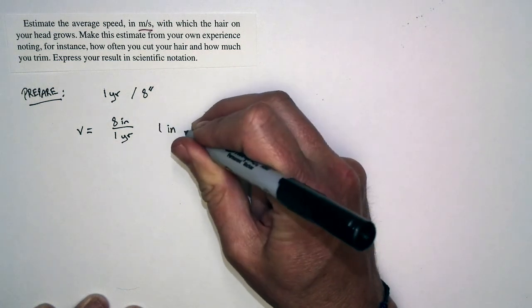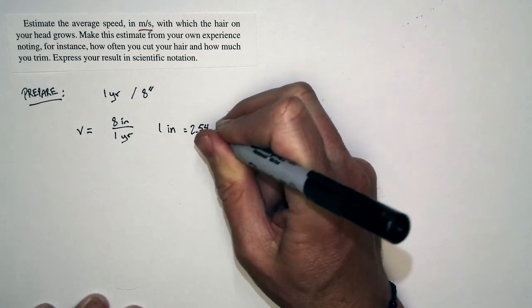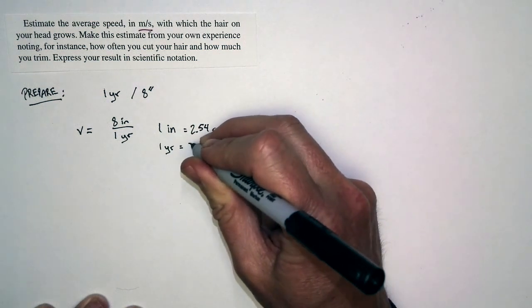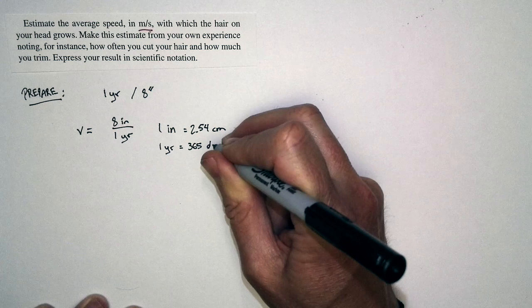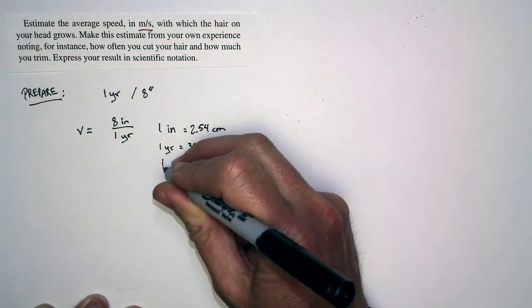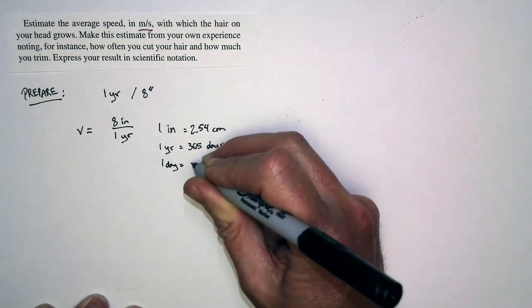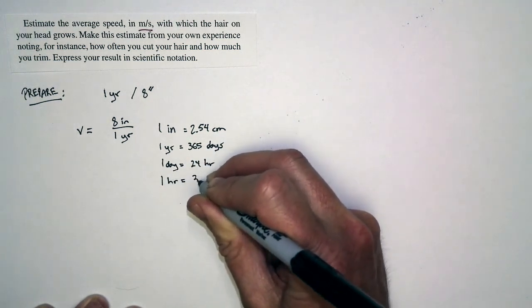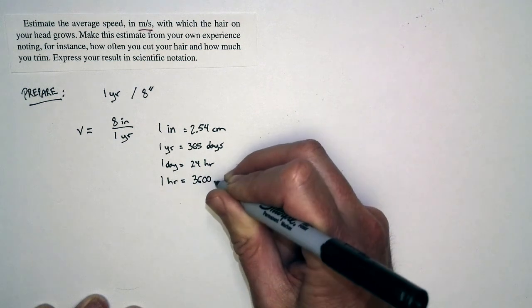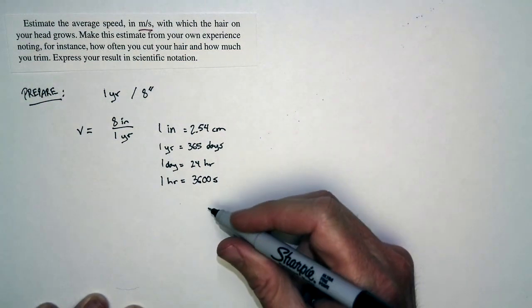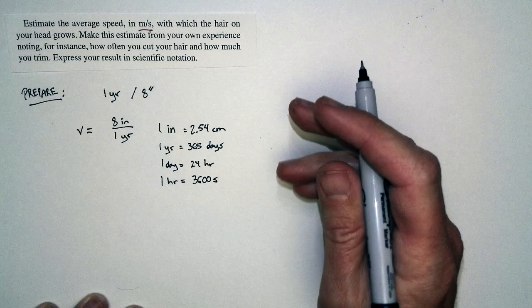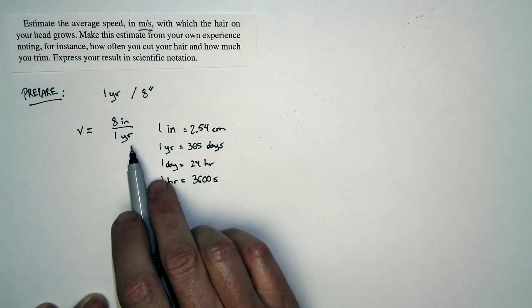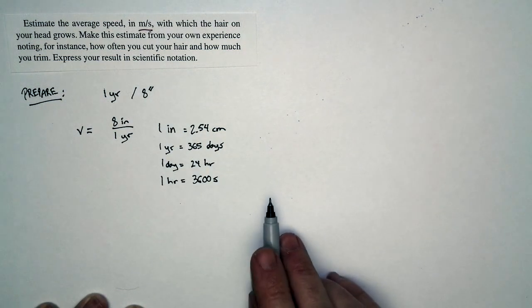An inch is 2.54 centimeters. One year is equal to 365 days. One day is equal to 24 hours, and one hour is equal to 3,600 seconds. So with these conversions in hand, we'll be able to make the conversion from a speed in inches per year into a speed in meters per second.